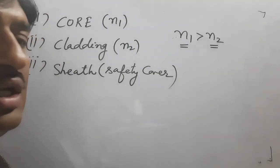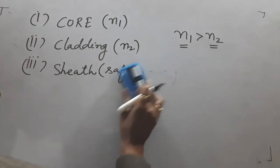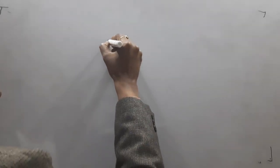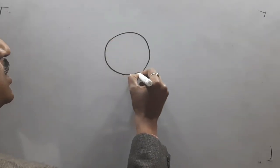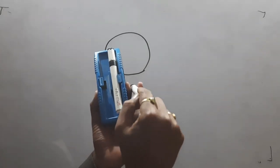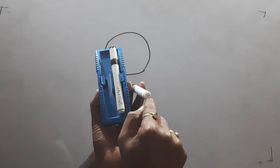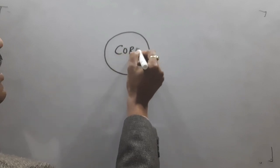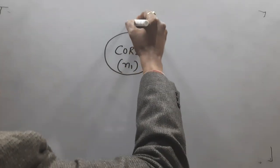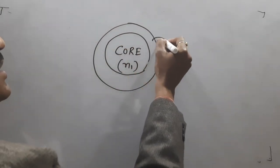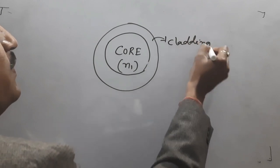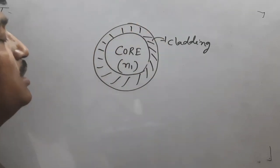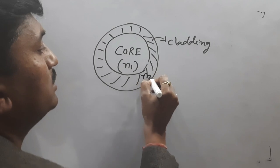If n1 is not greater than n2, total light does not follow the principle of total internal reflection. If we draw the cross section of the fiber cable, the innermost part is the core — the effective index of core is n1. After that is the cladding; the shaded portion represents the cladding material, and the effective index of cladding is n2.